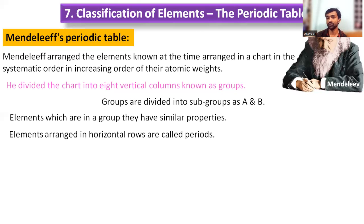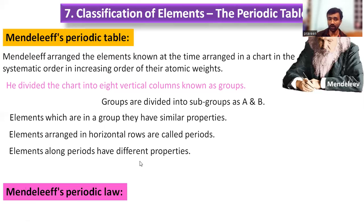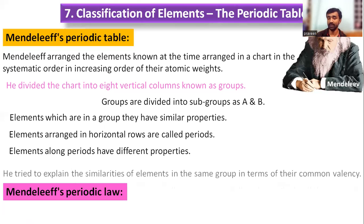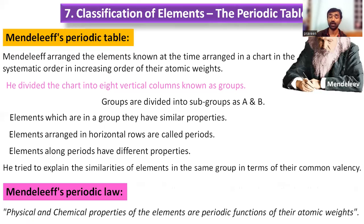In horizontal rows, there is no similarity between the elements in the same period. The law given by Mendeleev states that physical and chemical properties depend on atomic weight only. So atomic weight is used as the characteristic property for the periodic law, and properties are based on atomic weight.